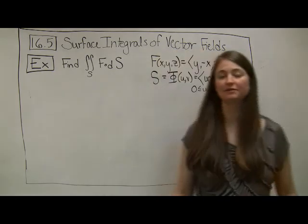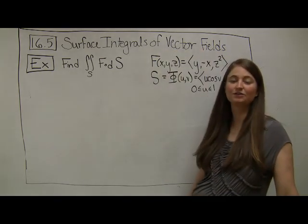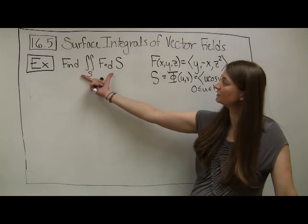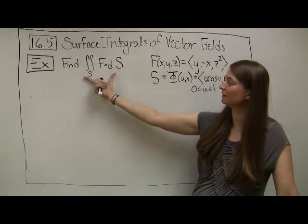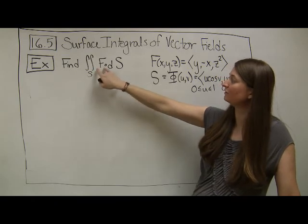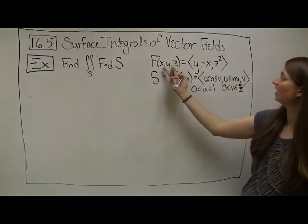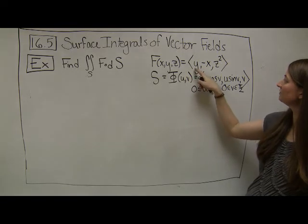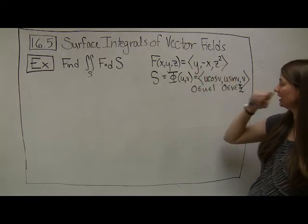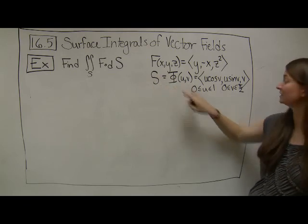Let's take a look at an example of computing a surface integral over a vector field. We want to find the surface integral, and again this is our notation, it might be confusing, over a surface S with a function F. In this case our vector field function is given by <y, -x, z²>.